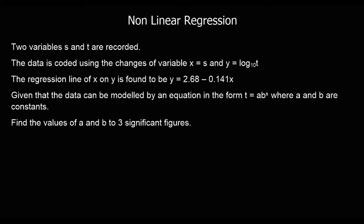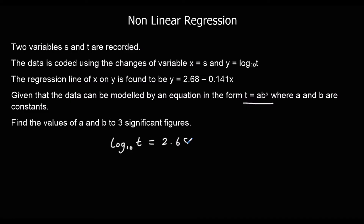Here's a question. Two variables, s and t, are recorded. The data is coded — coding has been used to change an exponential relationship into a linear relationship. We've got a regression line on the coding as y equals 2.68 minus 0.141x. Given that the data can be modelled by t equals a times b to the power of s, where a and b are constants, find a and b to three significant figures. We're going to undo the coding, changing y into log base 10 of t. So log base 10 of t equals 2.68 minus 0.141s.